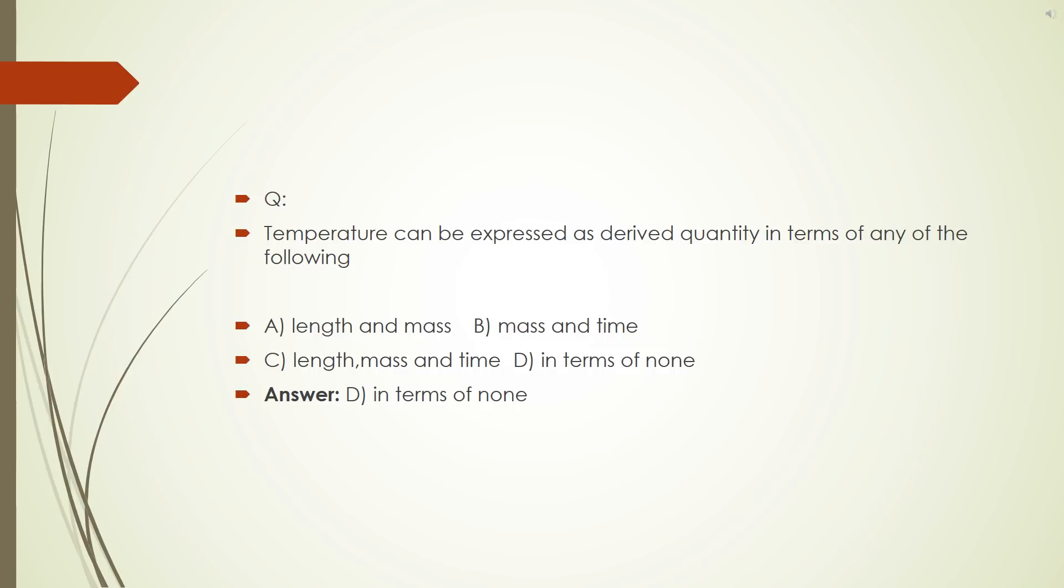Temperature can be expressed as derived quantity in terms of any of the following. A, length and mass. B, mass and time. C, length, mass time. D, in terms of none. The correct answer is D, in terms of none.